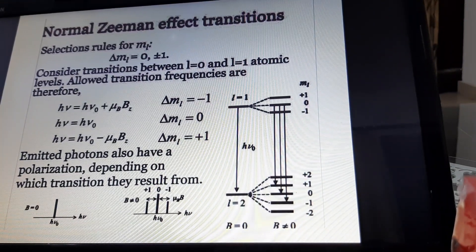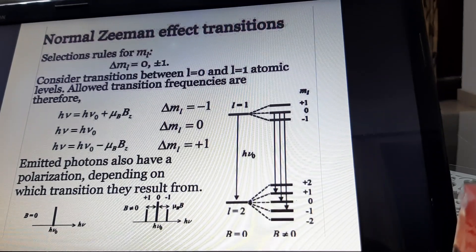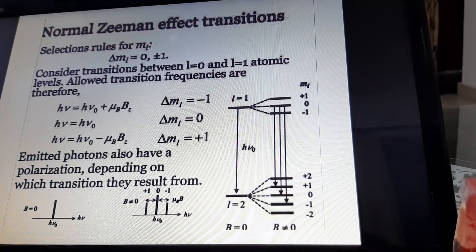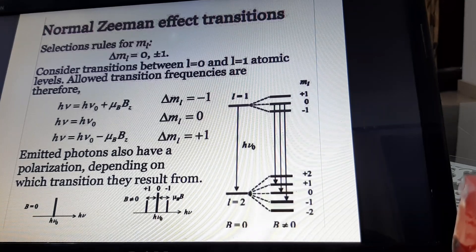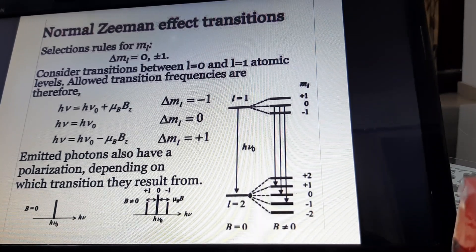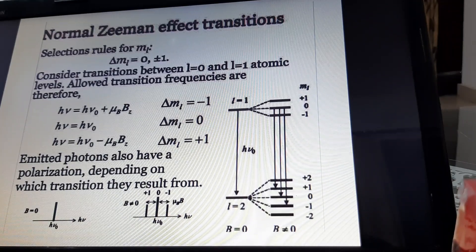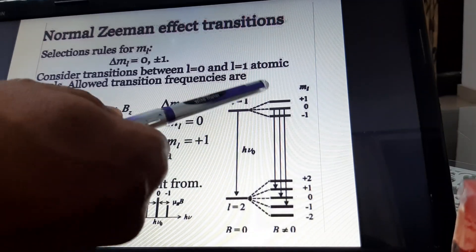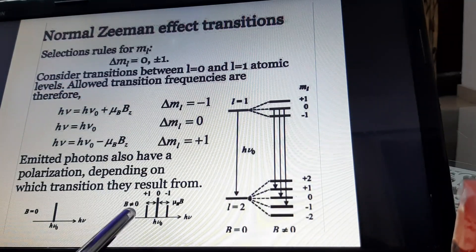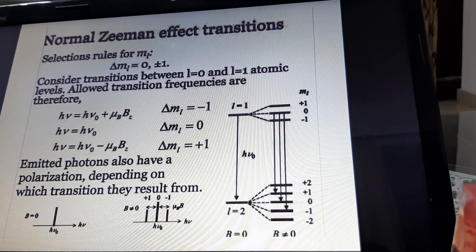The normal Zeeman effect transitions are represented by this diagram. There are selection rules for M values: ΔM = 0 and ±1. In this case, one line has ΔM = -1, the second has ΔM = 0, and the third has ΔM_L = +1. These three transitions are shown in this diagram and are also represented in a bar-like graph.